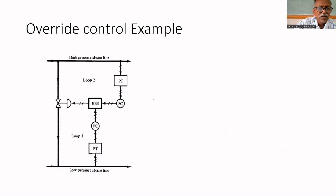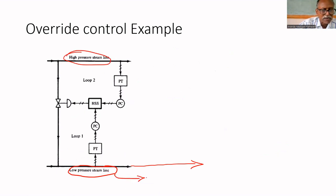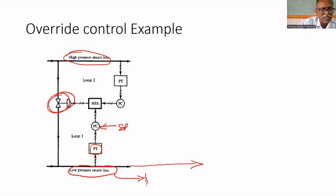A third example is a low pressure steam line. Steam will be supplied to the entire factory wherever it is required for heat supply. There are two lines: one is the high pressure steam line and another is the low pressure steam line. The pressure in the low pressure steam line will be maintained by adjusting a valve. A pressure transmitter feeds a pressure controller, and based on the set point, it will regulate the valve in normal mode.